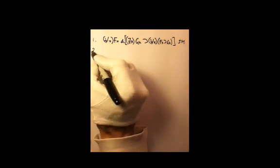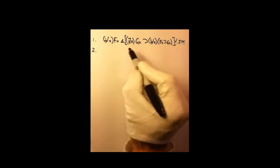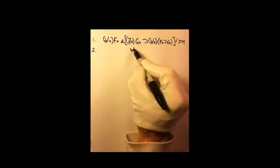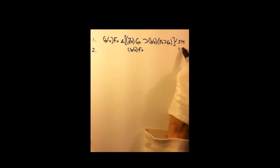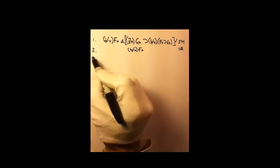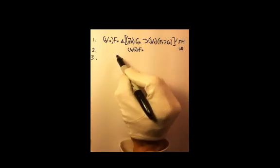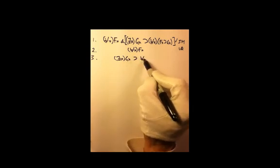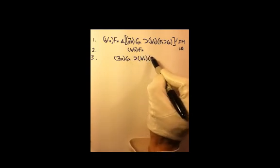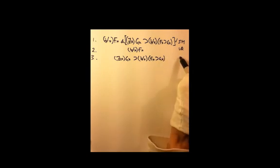This tree begins with decomposing the conjunction. We have 'for all x, f(x)' — that comes from line 1 by conjunction decomposition. And then 'if there is an x, g(x), then for all x, if f(x) then g(x)' — again from line 1 by conjunction decomposition.